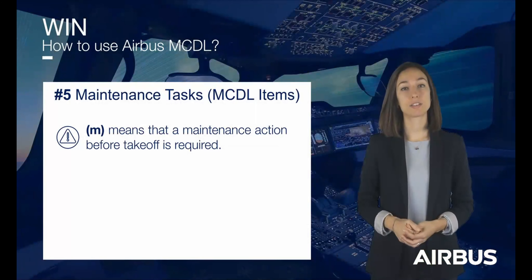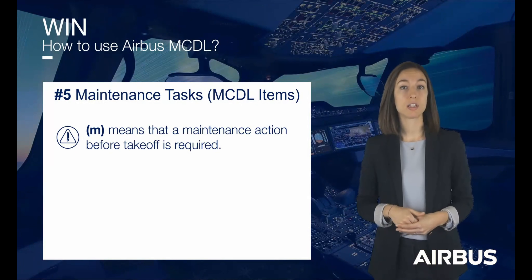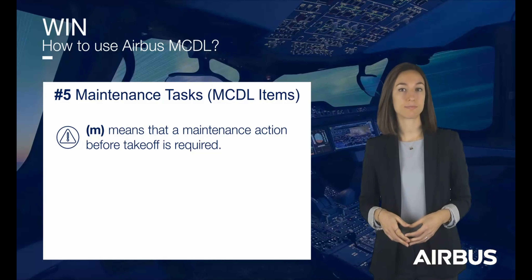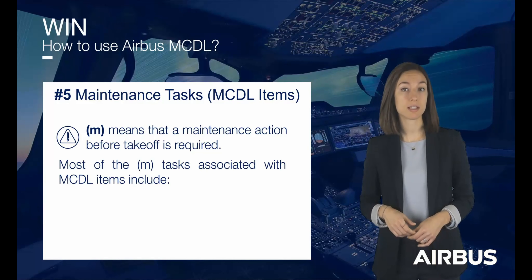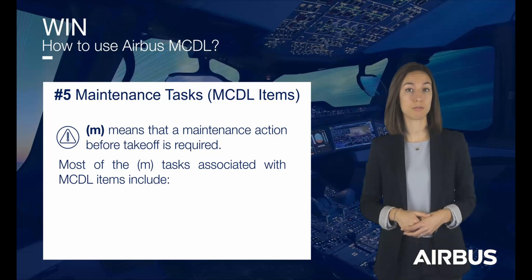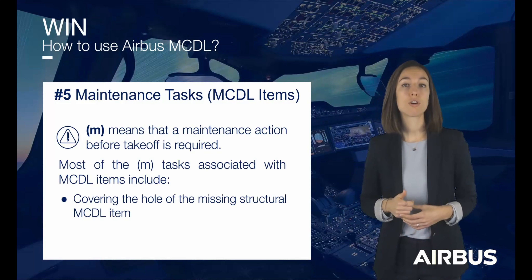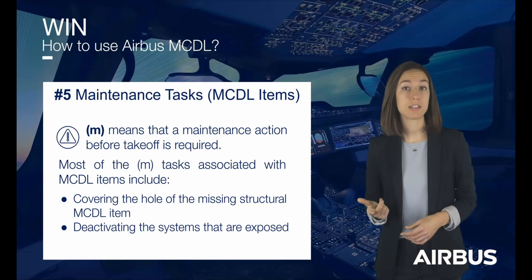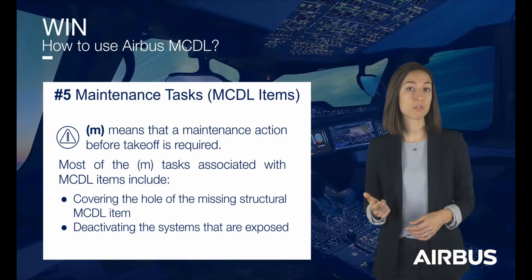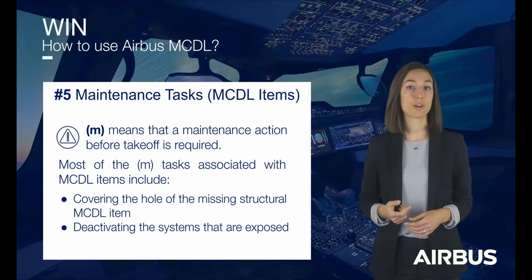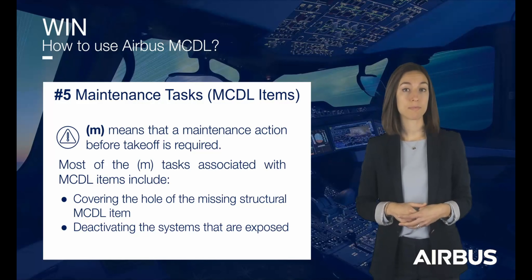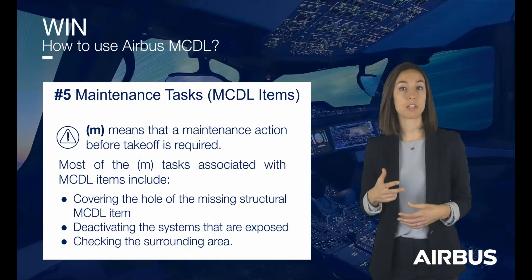In addition, based on the different technical analyses, some items can be missing provided that the required maintenance actions before take-off are completed. Most of the maintenance tasks associated with MCDL items include: first, covering the hole of the missing structural MCDL item; then, deactivating the systems that are exposed when an MCDL item is missing — for example, lights, cameras or electrical systems; and finally, checking the surrounding area.